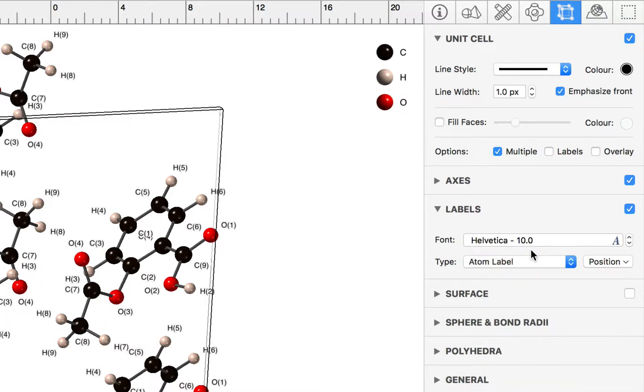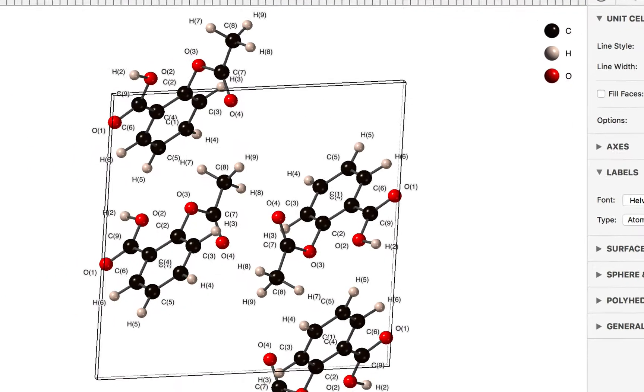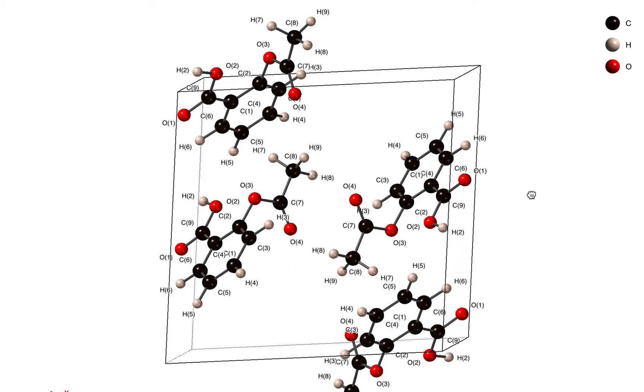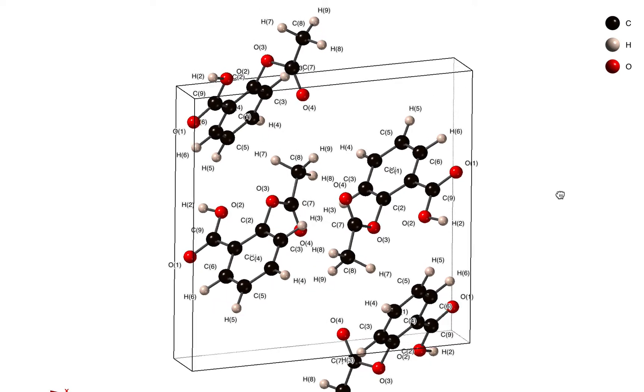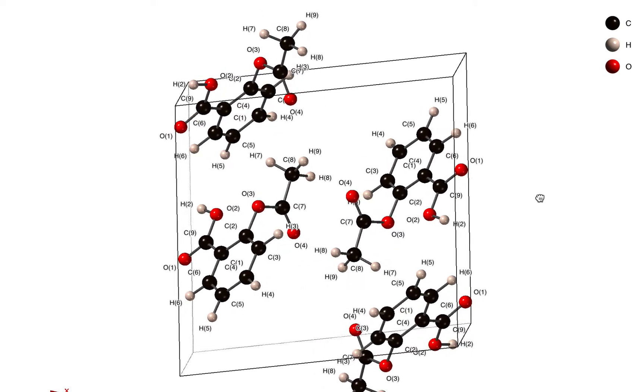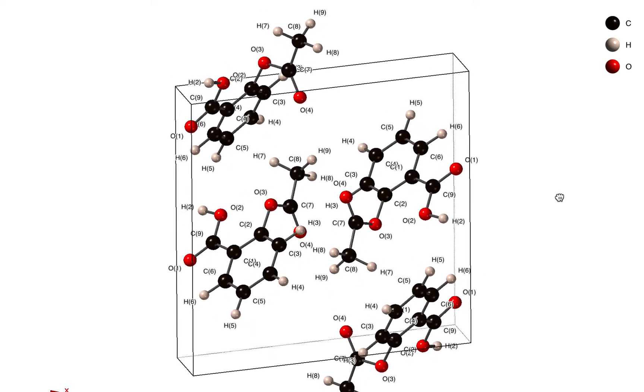For the moment let's have the atom labels, and CrystalMaker is automatically set to auto position those labels to try and minimize overlaps between labels and bonds.